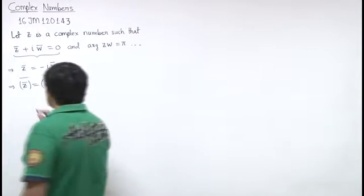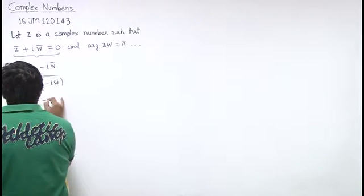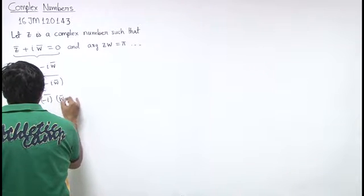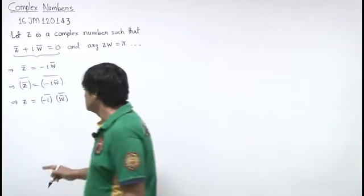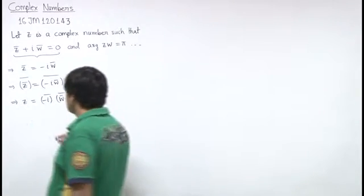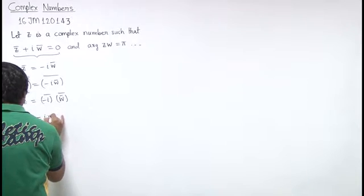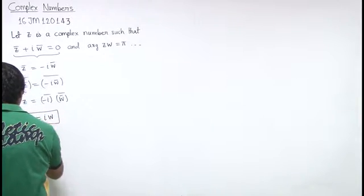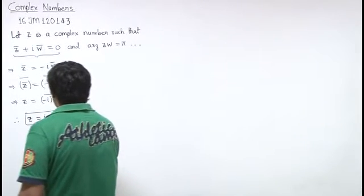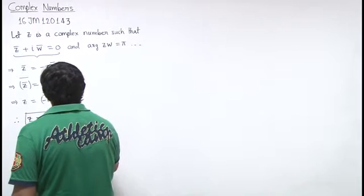Taking the conjugate, z bar ka bar is minus iota conjugate into w bar ka conjugate. Using the conjugate of minus iota as iota, we get w equal to z upon iota, which we can substitute here.